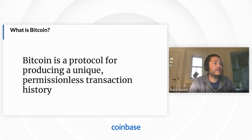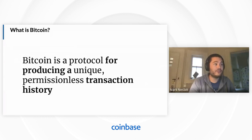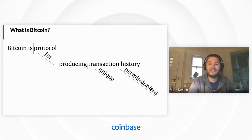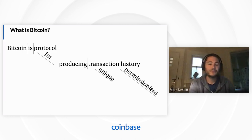Bitcoin is a protocol for producing a unique, permissionless transaction history. Let's break that down. Bitcoin is a protocol — a protocol that produces a transaction history — a transaction history that is unique and permissionless. I've diagrammed the sentence here, and we're going to use this sentence diagram as our roadmap to answering the question "what is Bitcoin" and understanding this definition.